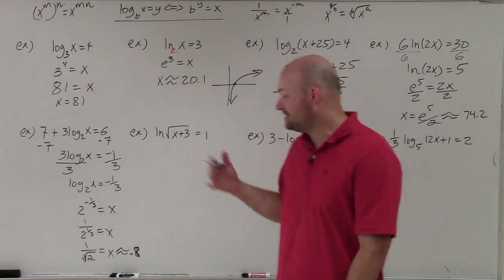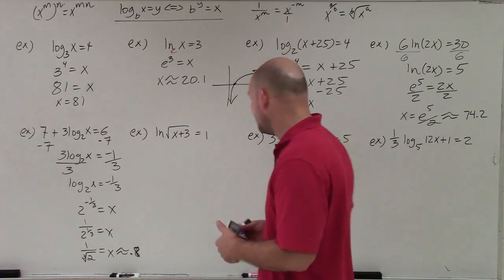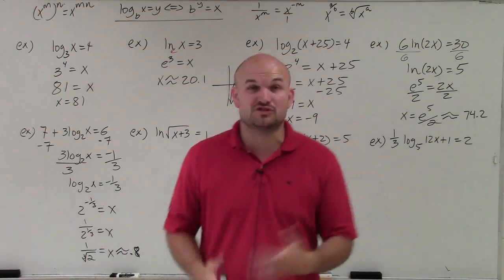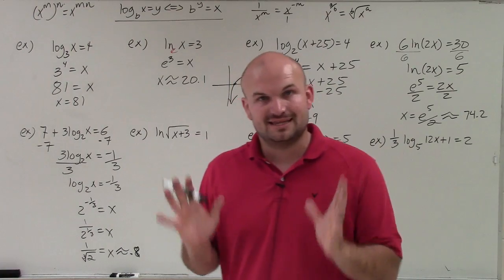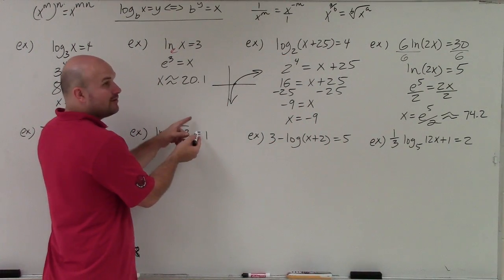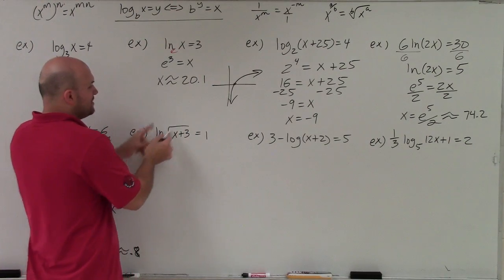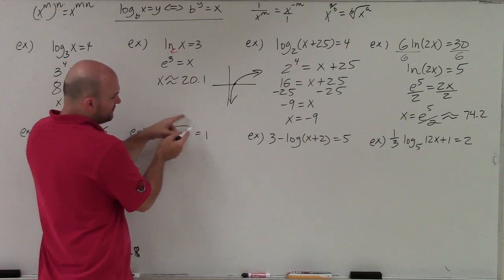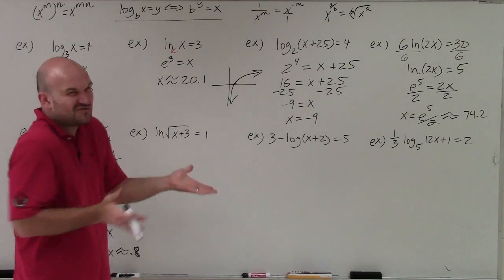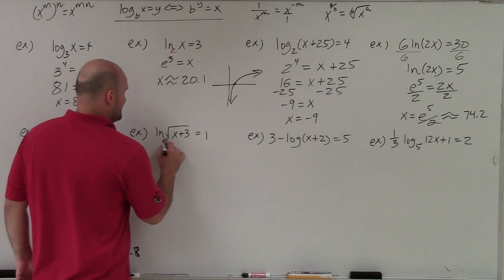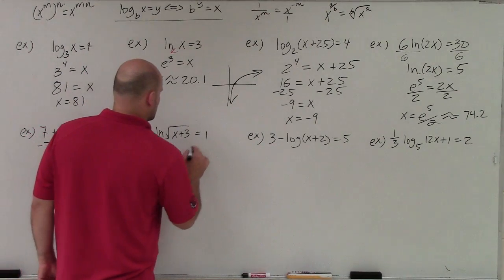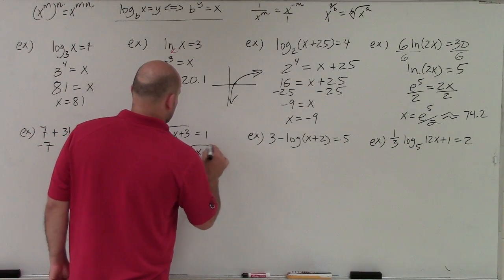In this problem, I'm taking the square root, but the square root is inside the function, so I don't have to do anything with it. You could rewrite it as a fractional power, but there's really no need. We rewrite in exponential form: e to the first equals the square root of x plus 3.